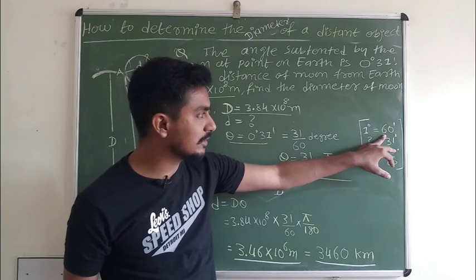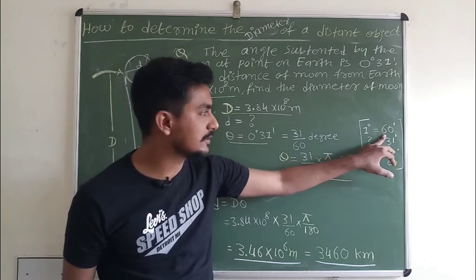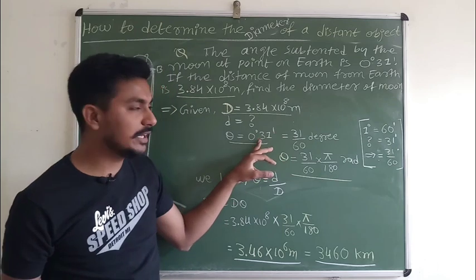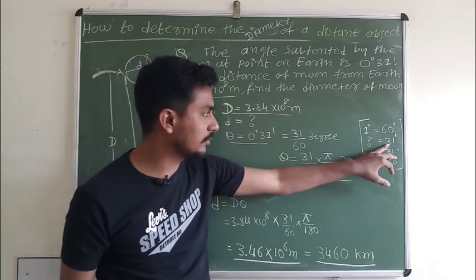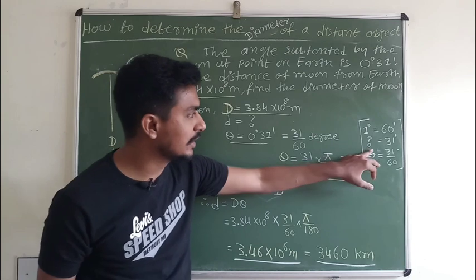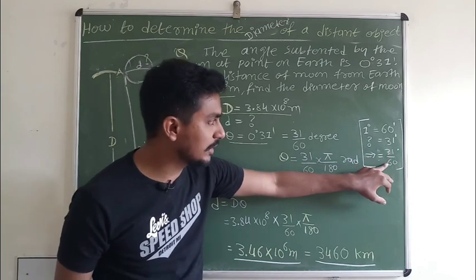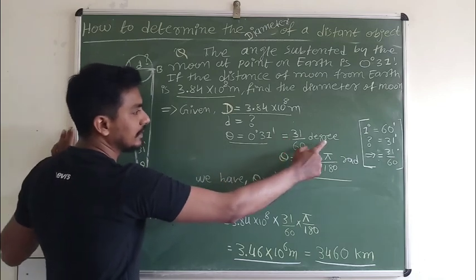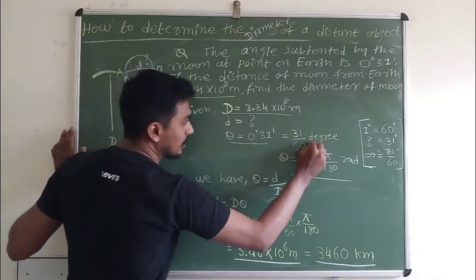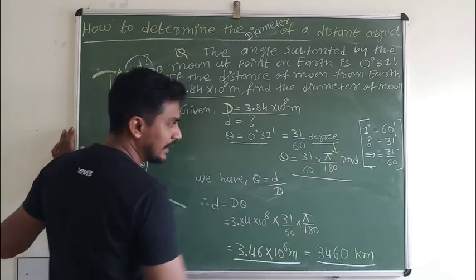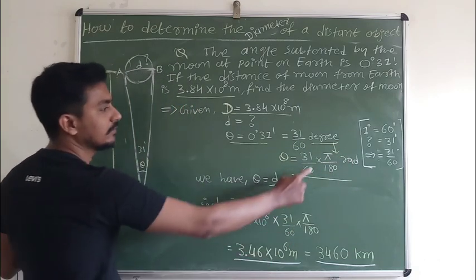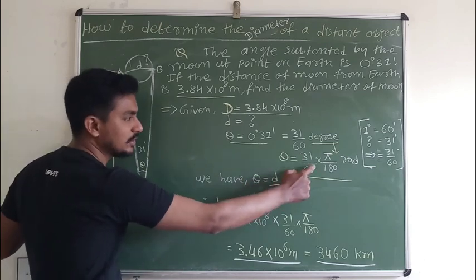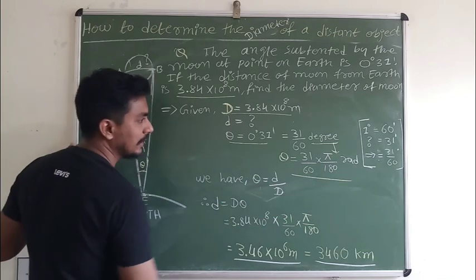The angle is given in minutes and we have to convert it into radians, which are the SI units. We know that 1 degree equals 60 minutes, so 31 minutes equals 31/60 degrees. Now we convert this to radians by multiplying by pi/180. So theta equals (31/60) × (pi/180) radians.